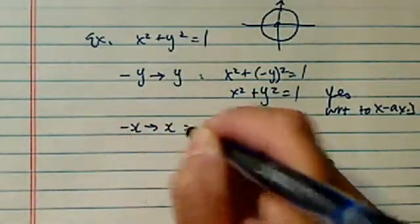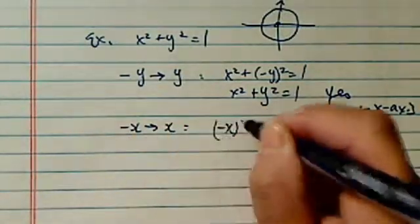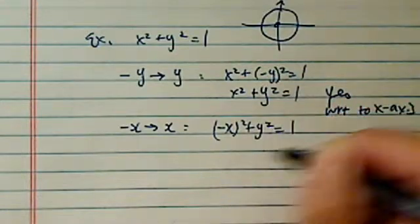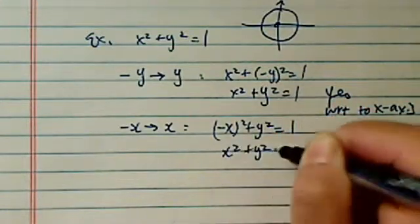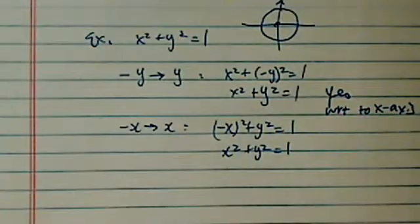Let's do the next one. Minus x replaces x. I have (-x)² + y² = 1. Simplify. I got exactly what I had back in again. So yes again.